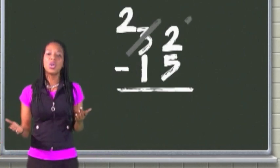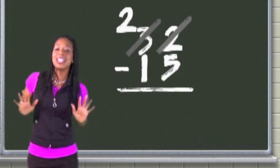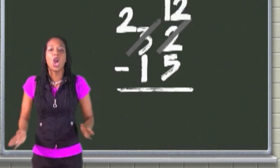Cross top left out, reduce by one, cross original out, and have no doubt. Add 10 to the original, subtract and look to do it again.